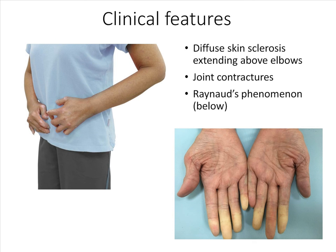There is also finger pulp atrophy seen here with flattening of the normal curvature of the pulp. This slide demonstrates the diffuse skin sclerosis that extends above the elbows in this patient. Note also the joint contractures seen in this patient's hands. Raynaud's phenomenon seen in this pair of hands shows clear demarcation of the pale phase of Raynaud's phenomenon.